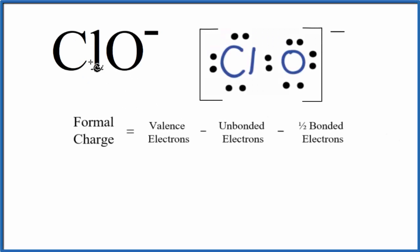Define the formal charge for each of the elements here in ClO-, that's the hypochlorite ion. We have a Lewis structure here, and then this formula. So let's first look at the chlorine here.